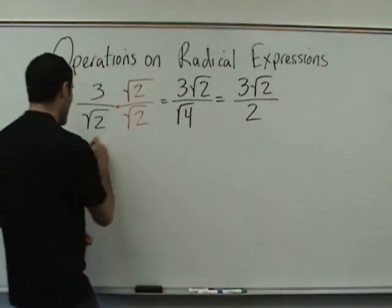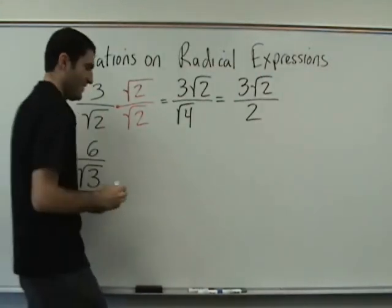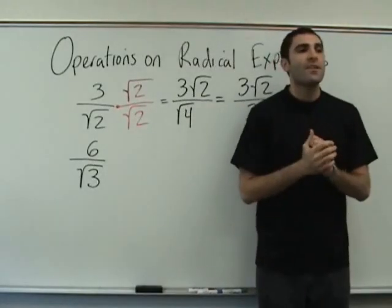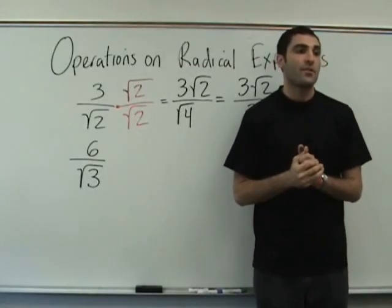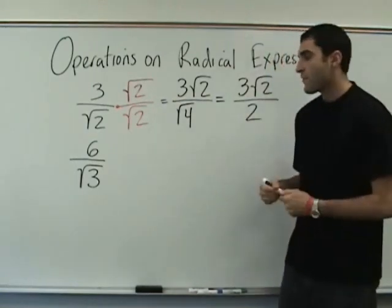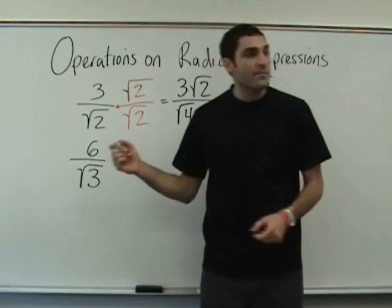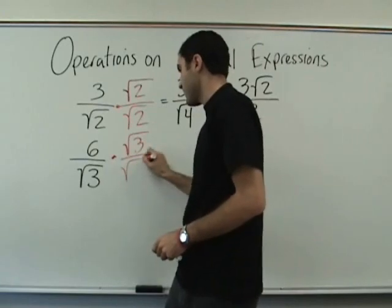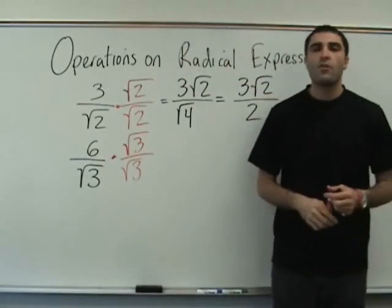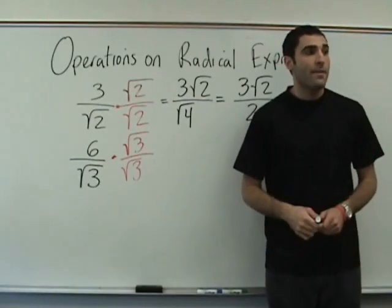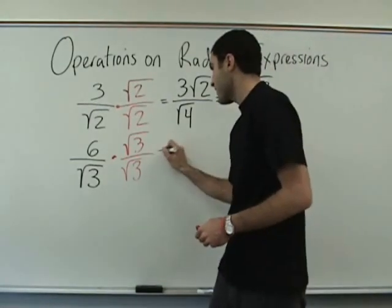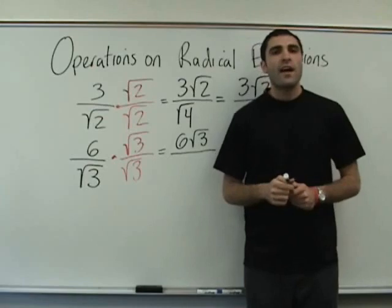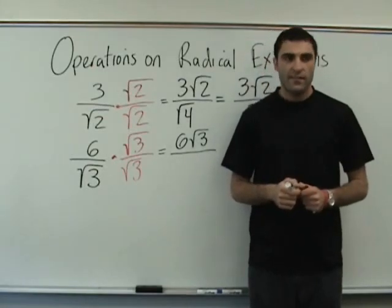Are you ready for a challenge? What do you multiply top and bottom by to get rid of square root of three? Square root of three. So what do we get on the top? Six rad three is correct. Over? Square root of nine, which is three.